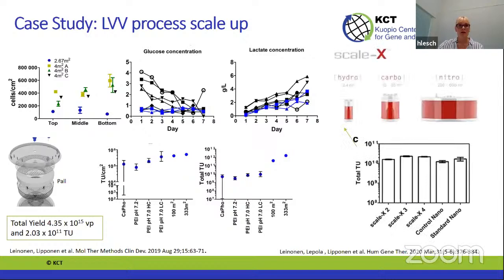PALL and ICELIS are not the only disposable fixed bed bioreactors on the market. Univercells has the Scalax family: Scalax Hydra is a 2.4 square meter disposable fixed bed bioreactor; they also have the Carbo at up to 30 square meters and Nitro up to 600 square meters. We tested the Hydra bioreactor and found that it works nicely for lentiviral vectors — better cell distribution and comparable or slightly better productivity versus the ICELIS Nano, though further experiments are needed.